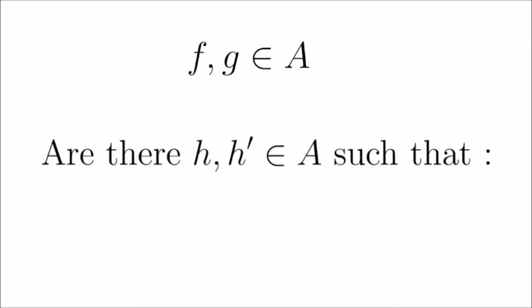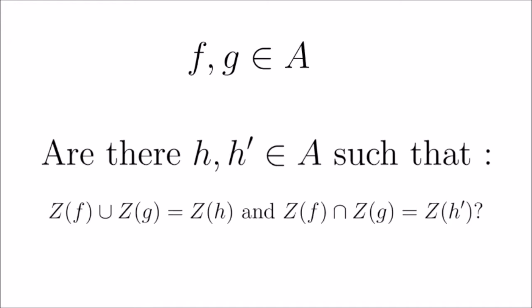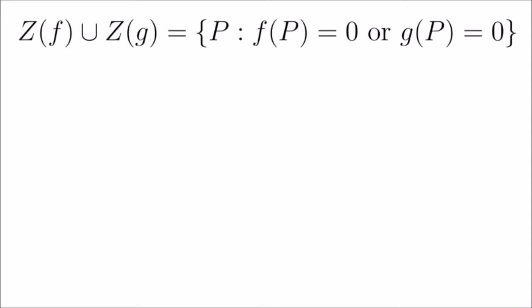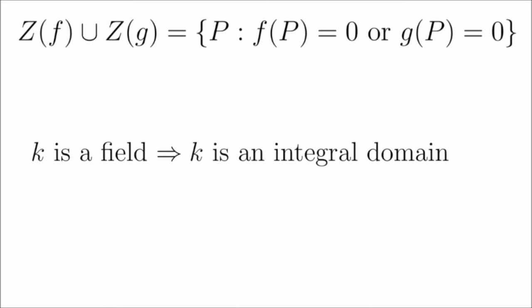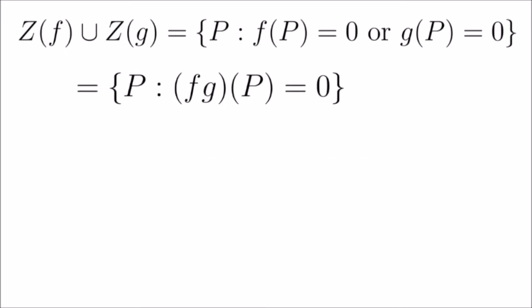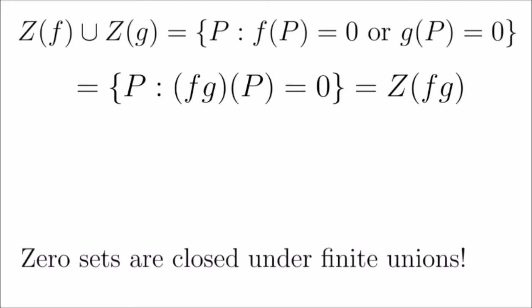Moving ahead, consider polynomials f and g in the same number of variables. One of the most basic questions about zero sets is whether we can find polynomials h and h' such that Z(h) = Z(f) ∪ Z(g) and Z(h') = Z(f) ∩ Z(g) — equivalently, whether the family of zero sets is closed under finite union and intersection. For unions: since k is a field, it is an integral domain, so the product of two functions with output in k is zero at a point if and only if either of the two functions are zero there. Thus Z(fg) = Z(f) ∪ Z(g), and zero sets are closed under finite unions. QED.